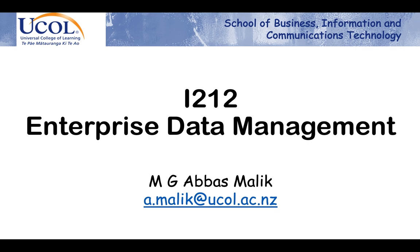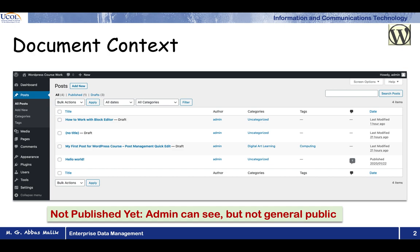I hope that you remember all those things that we have learned earlier about WordPress, so we will continue to learn about WordPress. The first thing is the document context that we are going to cover. Just a little bit of review: remember that we have three types of contents — one is the post, the other one is the media, and the third one is the pages. Posts are more like dynamic contents, pages are more like static things, and media of course is more like images, videos and audios.